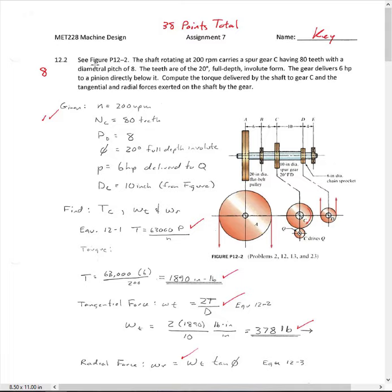The first problem was 12-2. See figure 12-2. The shaft is rotating at 200 RPM, carries a spur gear C having 80 teeth with a diametral pitch of 8. They are of the 20 degree full depth involute form. The gear delivers 6 horsepower to a pinion directly below it. Compute the torque delivered by the shaft to the gear and the tangential and radial forces exerted on the shaft by the gear.